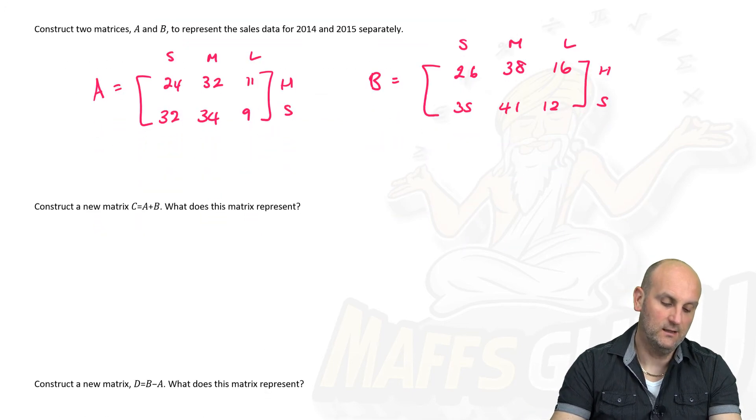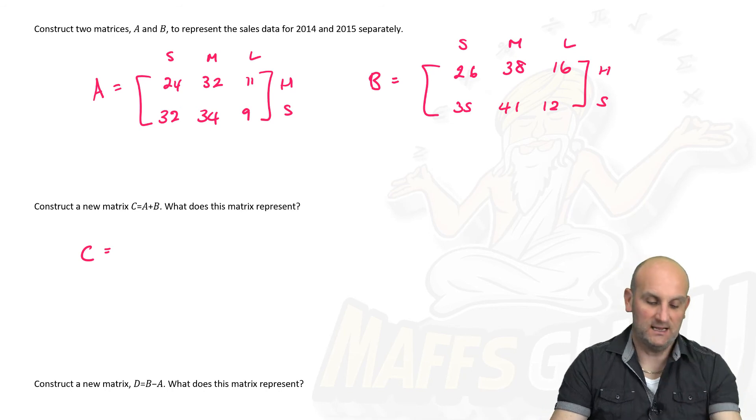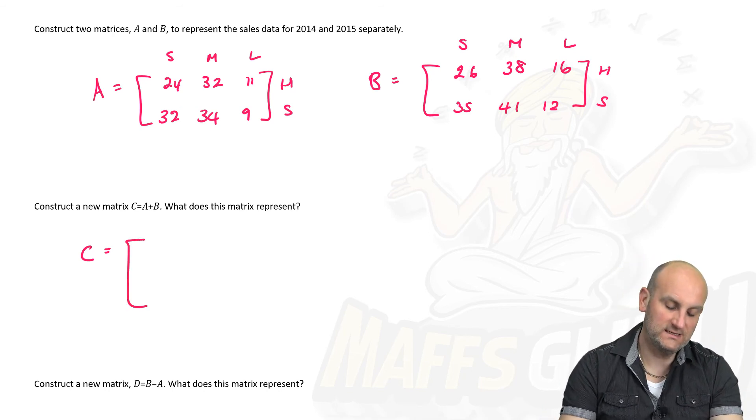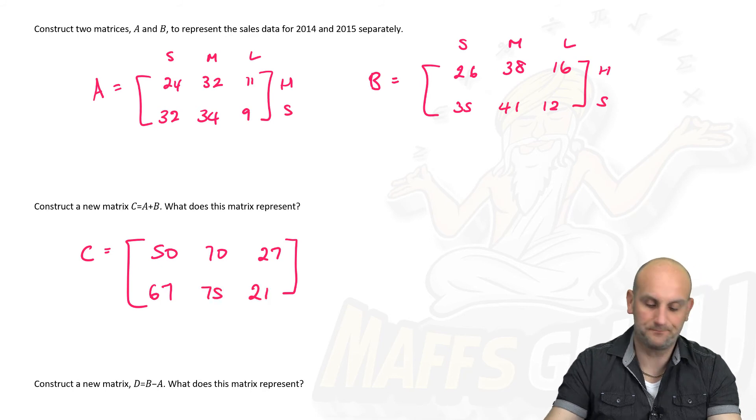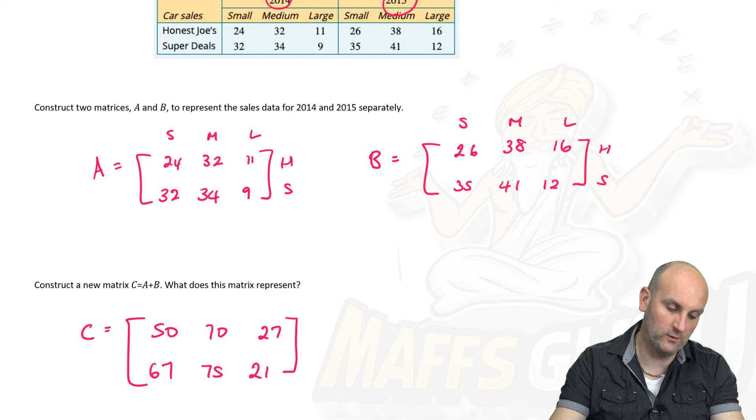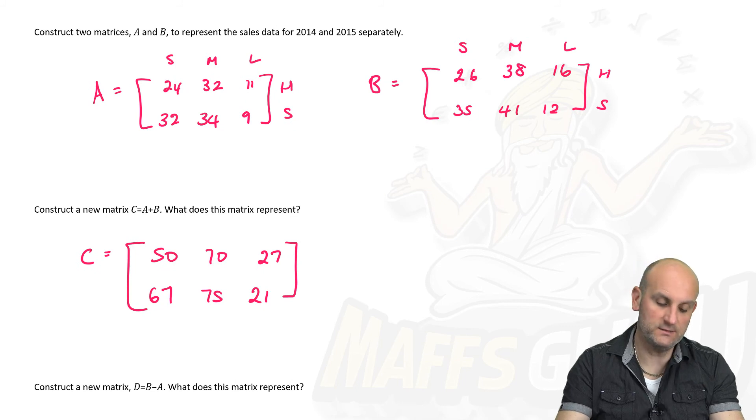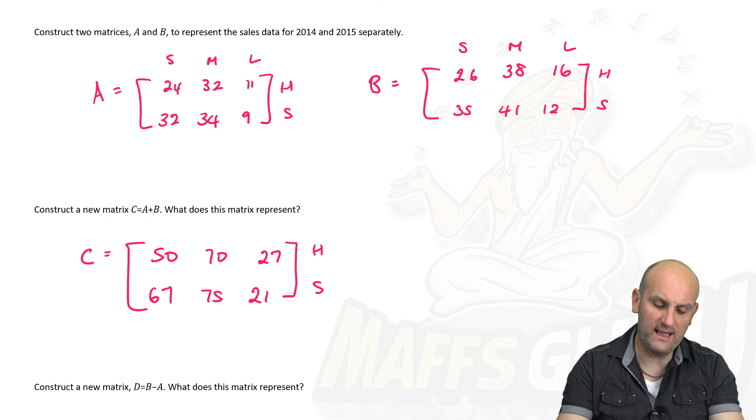Construct a new matrix C, A plus B. So, C is going to be equal to those two matrices together. Let's see if we can do those in our head because I'm just adding some numbers together. So, 24 and 26 gives me 50. 32 and 38 gives me 70. 11 and 16 gives me 27. 32 and 35 gives me 67. 41 and 34 gives me 75. And 9 and 12 gives me 21. And there we go. It says, what does the matrix represent? Well, when you're adding together the sales from 2014 and 2015, it's the total sales. So, these are the total sales for Honest Joes and Super Deals for small, medium and large cars.